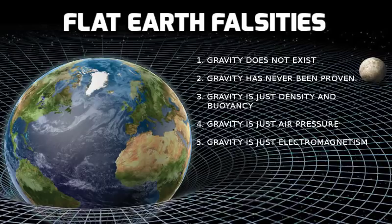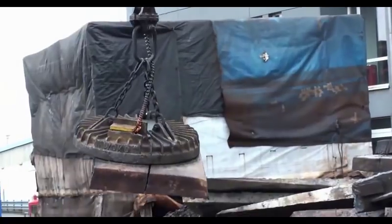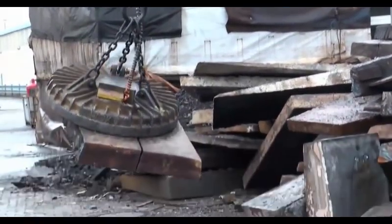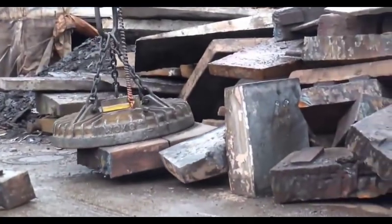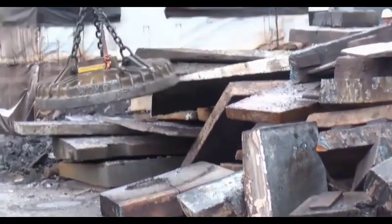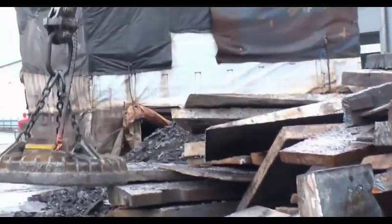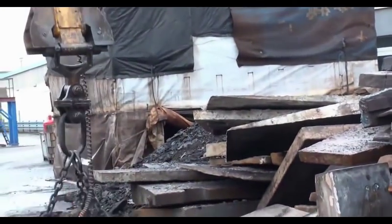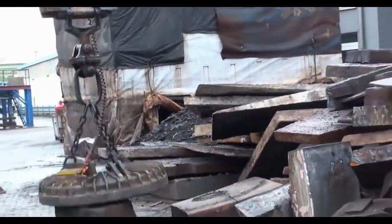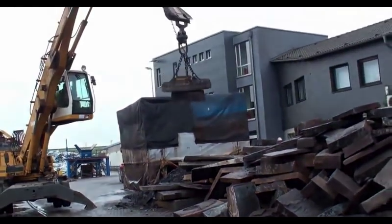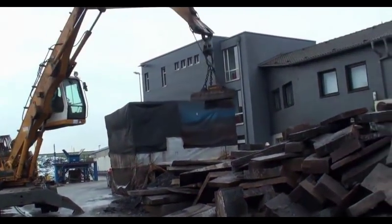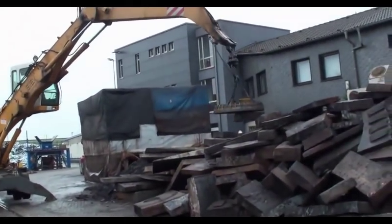Claim number five: gravity is just electromagnetism. This is trivial to debunk. Electromagnetism only works on ferrous metals — gravity works on everything with mass. Try picking up a cat with an electromagnet, and then try to tell me it can be the cause of the gravitational effects we see everywhere.